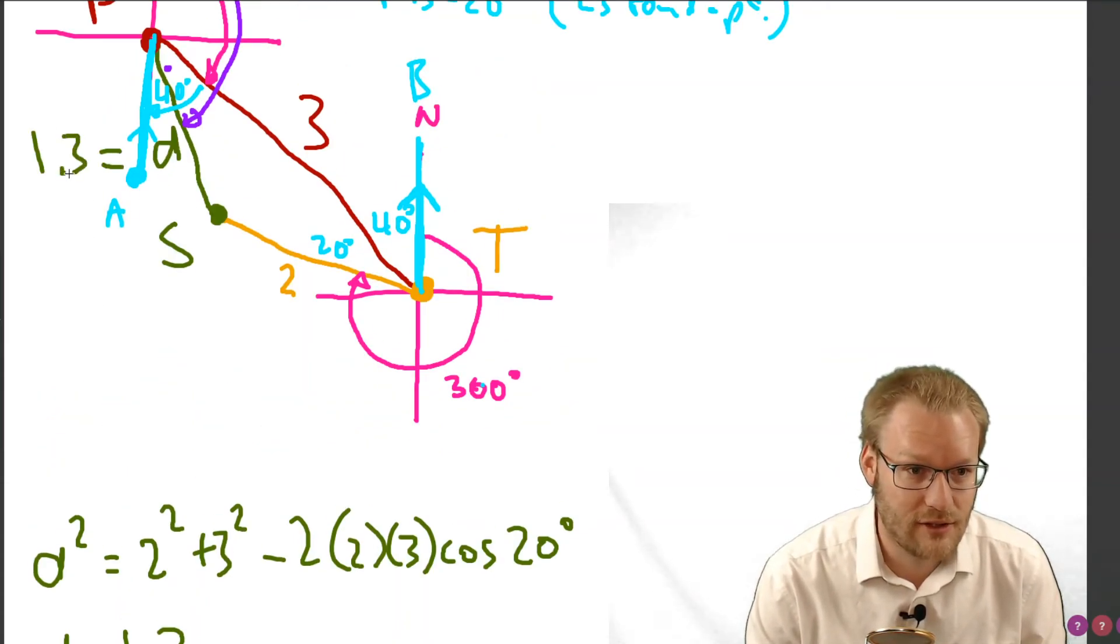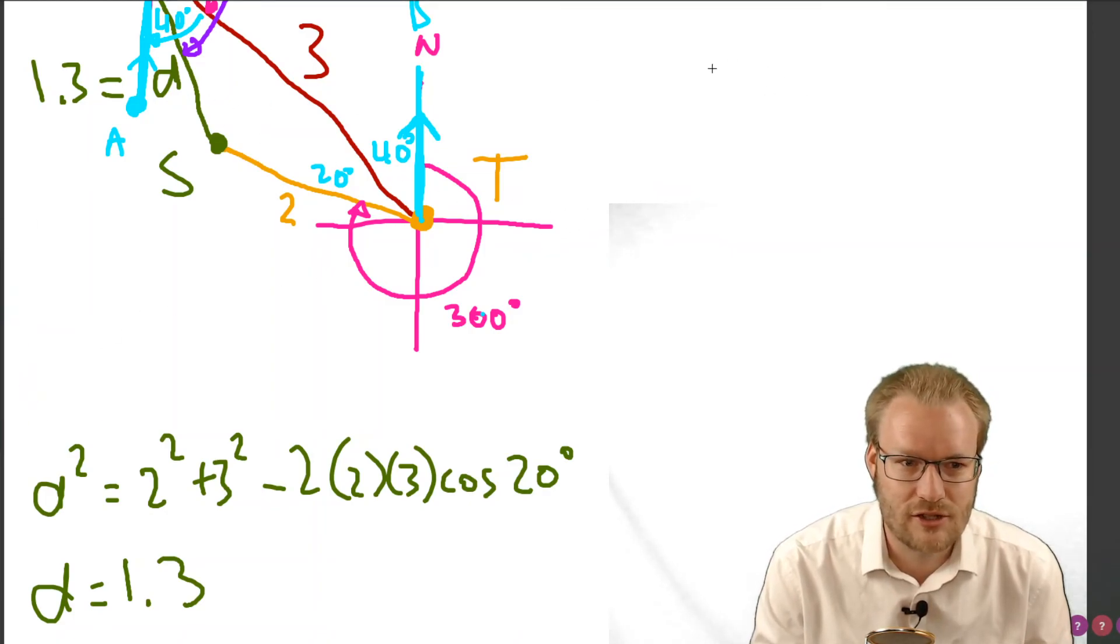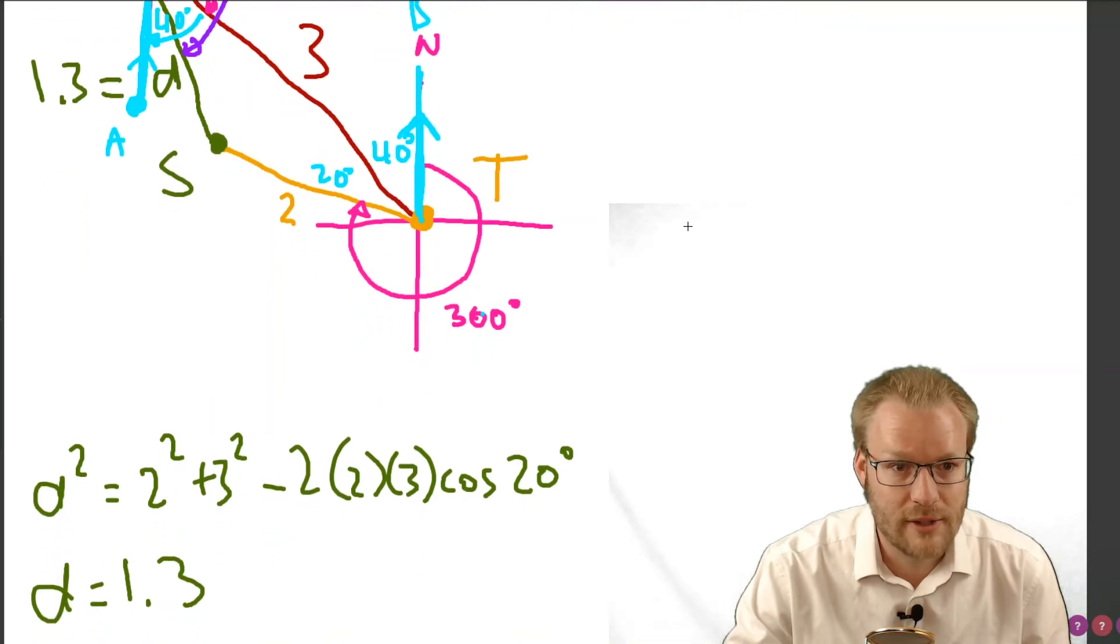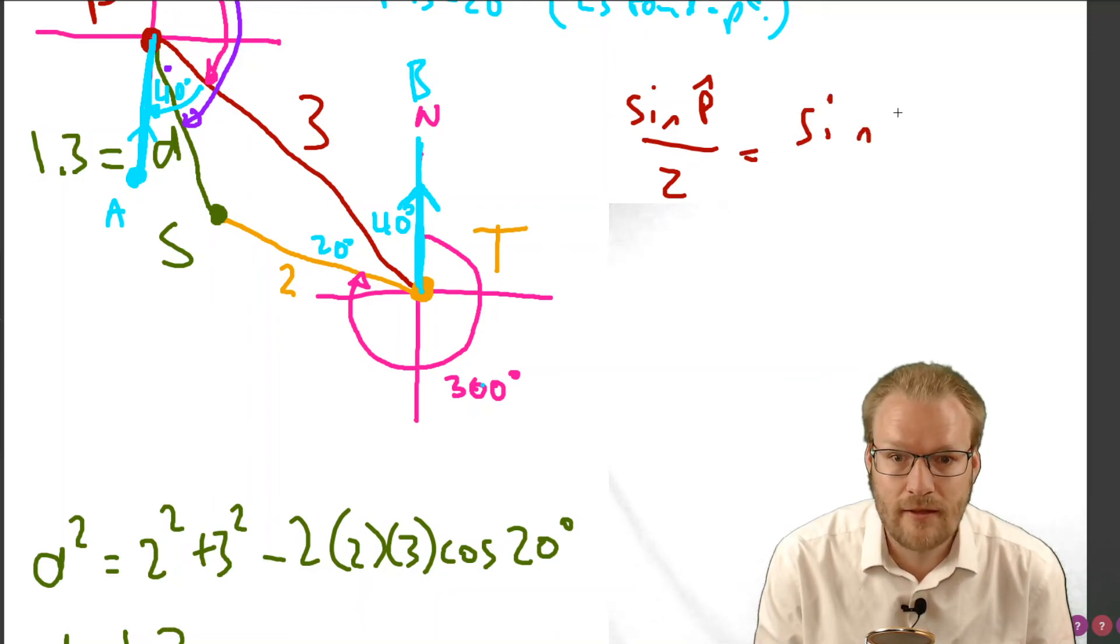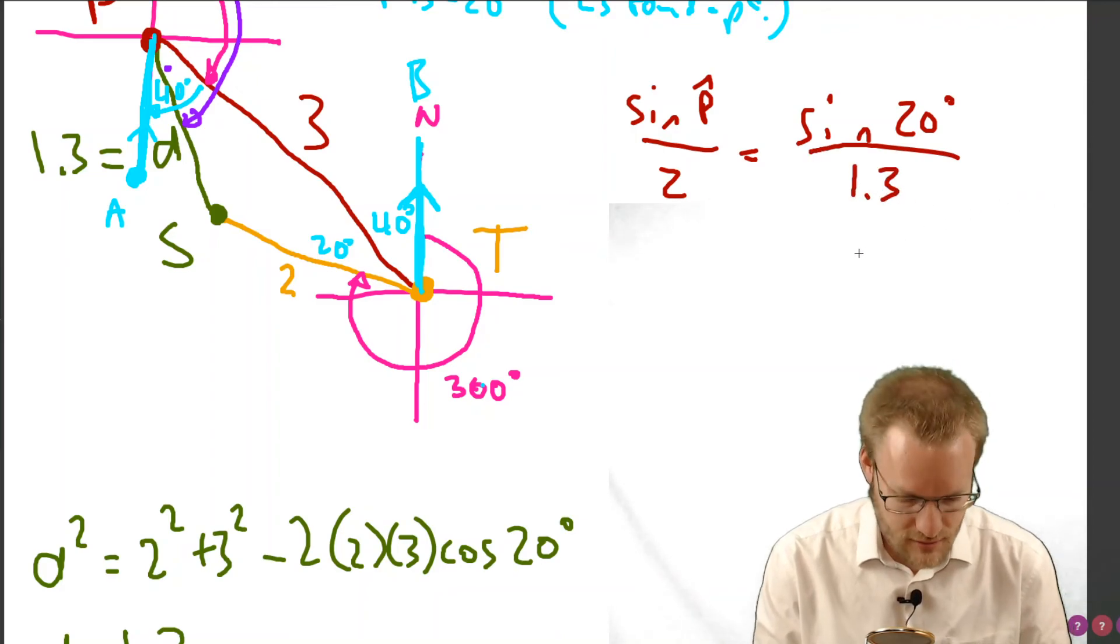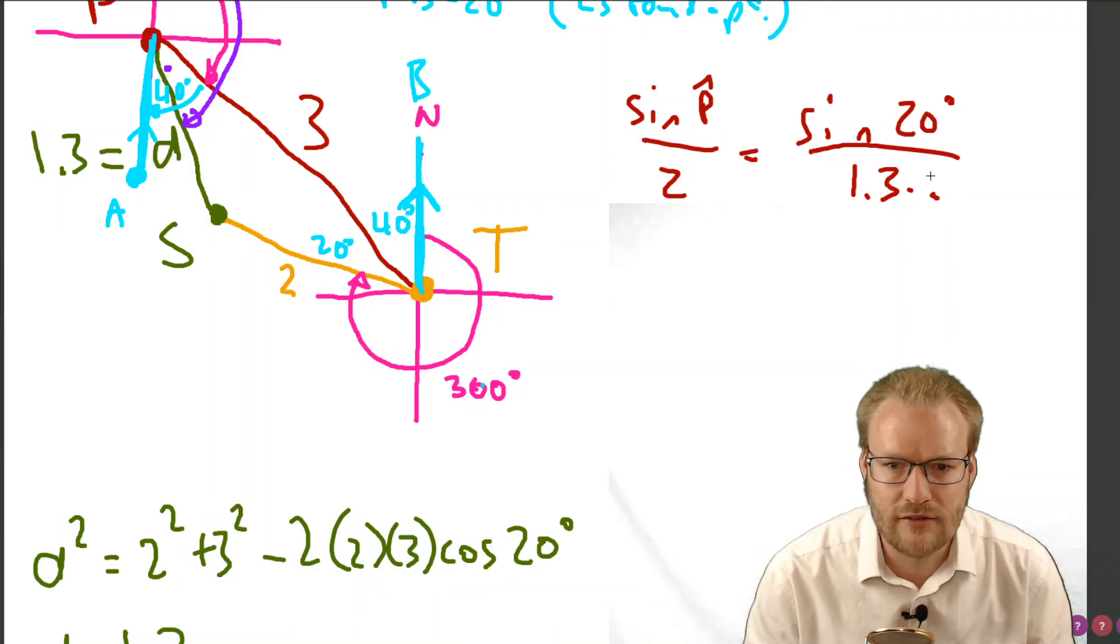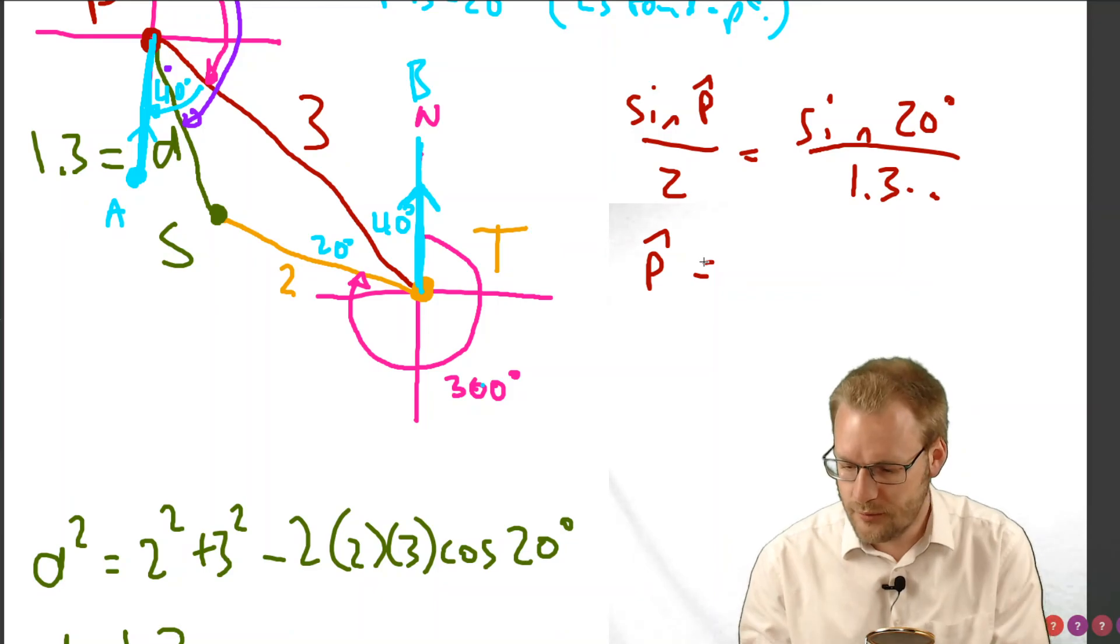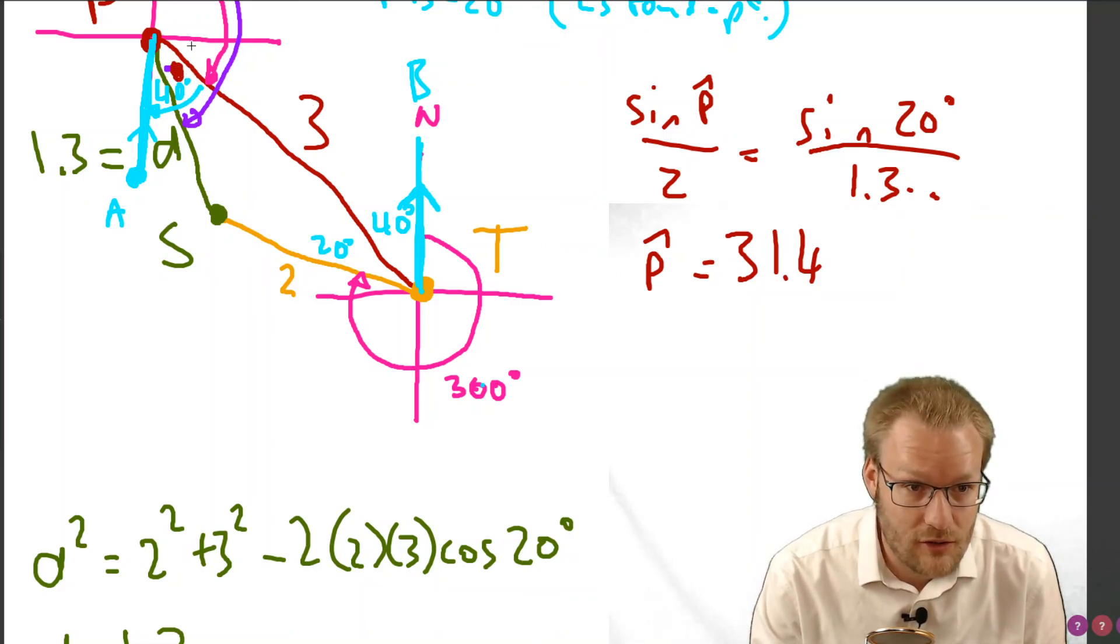We've got d, put it in the diagram. D equals 1.3. We got 20 with a partner across there, so we've got the next part of the puzzle, which is we need to find this angle up here, p for port. We got sine rule: sine p over 2 equals sine 20 over 1.3. I'm going to use this full value though. Therefore times that by 2 and shift sine it, and p then equals 31.4.